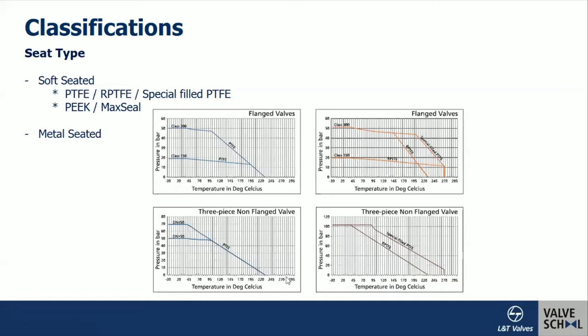The most popular soft seat used in ball valves is PTFE — polytetrafluoroethylene, commercially known as Teflon. PTFE has a maximum withstanding temperature of 210°C, and at ambient conditions the cold working pressure can be up to 69 bar. This means PTFE-seated valves with a Class 800 body construction can be used for 69-bar service conditions.